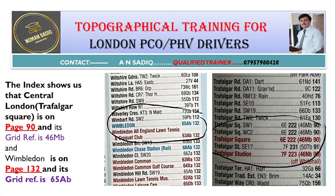Similarly, we can find grid references for other areas. If we want to find the grid reference of Wimbledon, we go to the index alphabetically under W, and we find Wimbledon on page 132 with grid reference 65 AB. For Trafalgar Square, it is on page 90 with grid reference 46 MB. There are actually two grid references and two page numbers for Trafalgar Square — one is for the large scale map and one is for the small scale map.